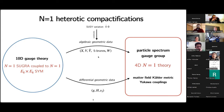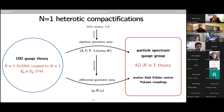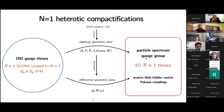The algebraic geometric data determines which differential geometric data you can put, because a metric only applies to a given manifold and the bundle metric only lives on a given bundle. All of this is constrained by the SUSY variation requirement, which for example constrains our manifold X to be Calabi-Yau and our bundle V to satisfy certain properties. Altogether these specify the 4D N=1 low energy limit of the theory.